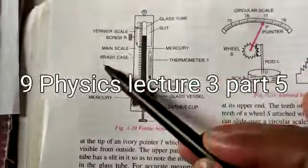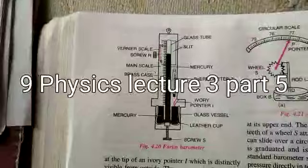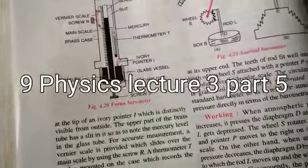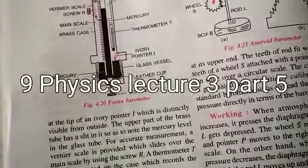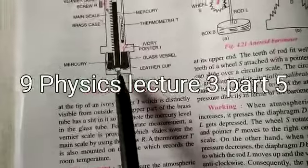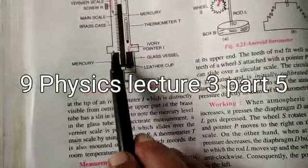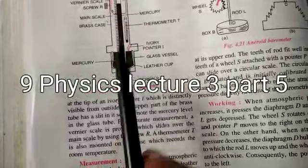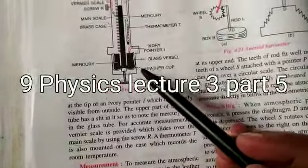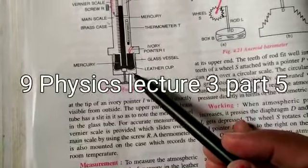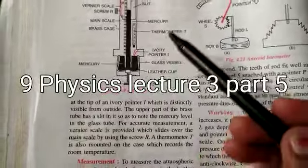So, now you can see in this diagram. Firstly, the brass case is there. If brass case is there, it means the tube support is there. Similarly, after having tube support, you can see this glass vessel in which the leather cup is there. It is also covered with the help of brass case. So, this trough is also covered now. No chances of adding impurity in this mercury and the density is going to be vary. So, it is very easy for us to measure.